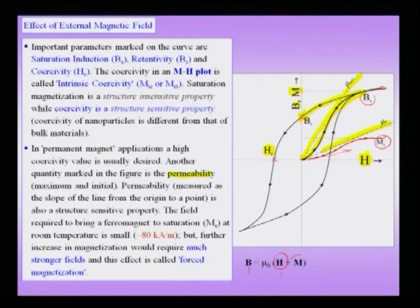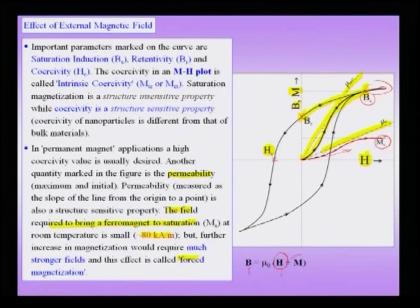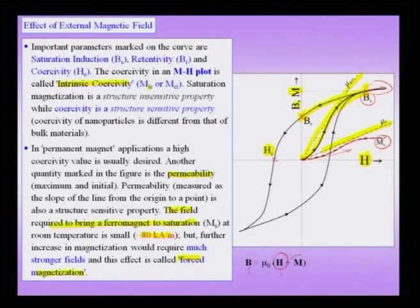The field required to bring a ferromagnet to saturation at room temperature is small, about 80 kilo-amperes per meter. To increase magnetization beyond saturation requires very large fields — this is called forced magnetization. In these lectures we only discuss materials magnetized up to saturation. The coercivity in the B-H loop is called the normal coercivity, while that in the M-H loop is called the intrinsic coercivity, denoted M_C or M_CI. Coercivity is a microstructure-dependent property.